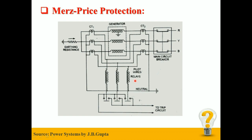But under abnormal condition, currents at both ends will no longer be similar. Therefore, the induced EMF in the CT secondaries will not be equal. This will lead to a differential current flowing through the relay operating coil, which will send a trip signal in order to protect the stator winding of the three-phase generator.